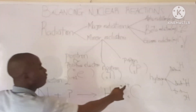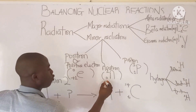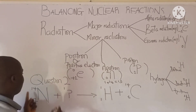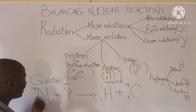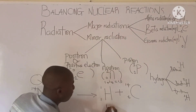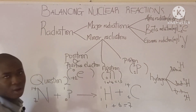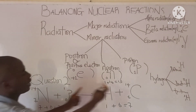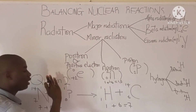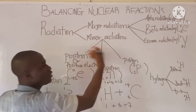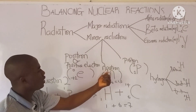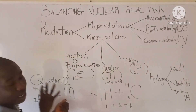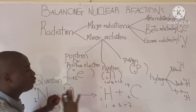Moving forward, let's solve. 14 plus 1 is 15. So what value should be here to balance? It is 1, because 14 plus 1 is still 15. Looking at the subscript: here is 7 and here is 7, because 1 plus 6 is 7. What value should be written here? 0, because 7 plus 0 is 7. So here is 7 and here is 7; here is 15 and here is 15 — balanced. Which radiation has this configuration? It is one of the minor radiations — neutron, which is 1 and 0. So neutron was the missing atom, and the reaction is now balanced.